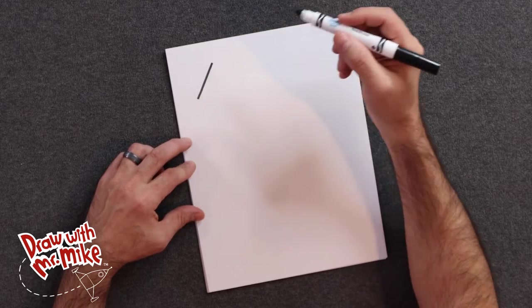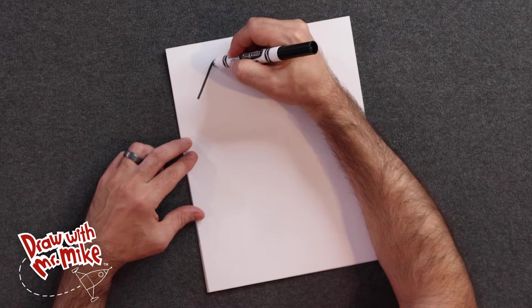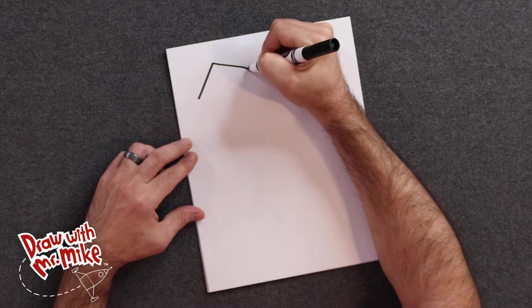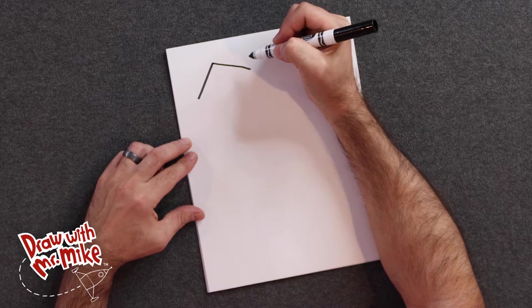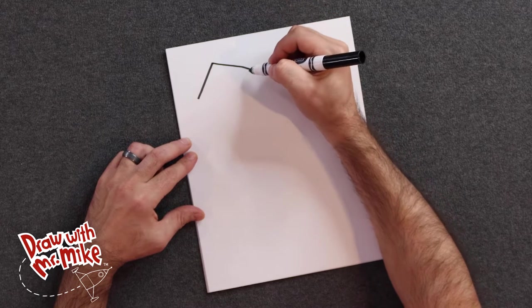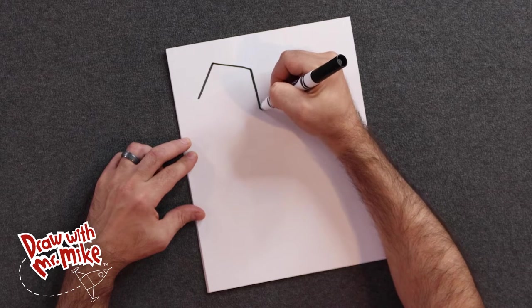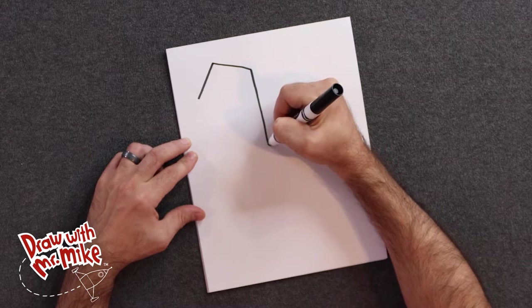Next, we're going to add another line. And that line will go on this side, over here. And now we're going to add in another line. And we're going to bring that line all the way down to here.